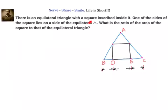There is an equilateral triangle with a square inscribed inside it. One of the sides of the square lies on a side of the equilateral triangle. What is the ratio of the area of the square to that of the equilateral triangle? We have to find out the ratio of the area of the square to that of the equilateral triangle.